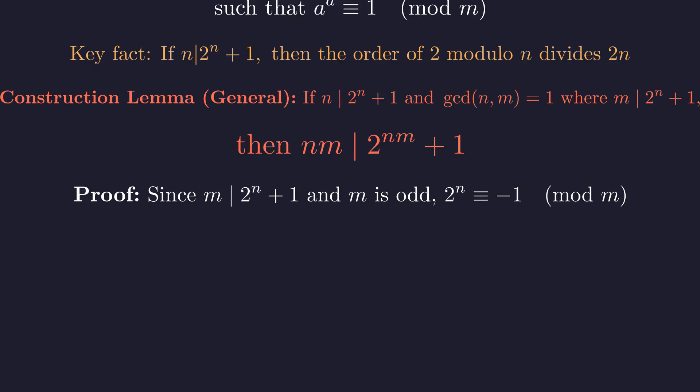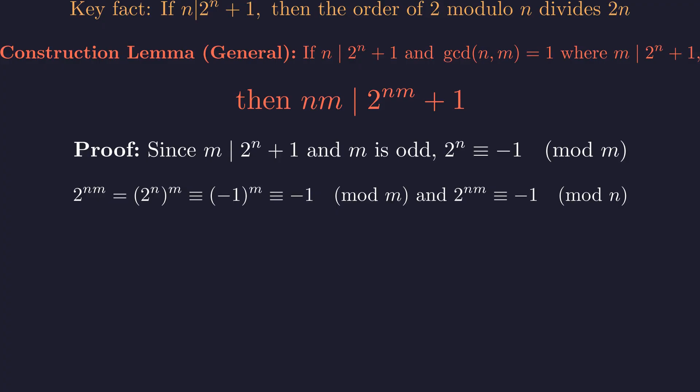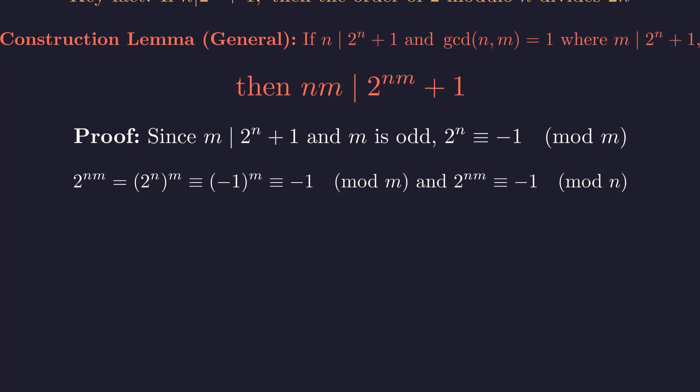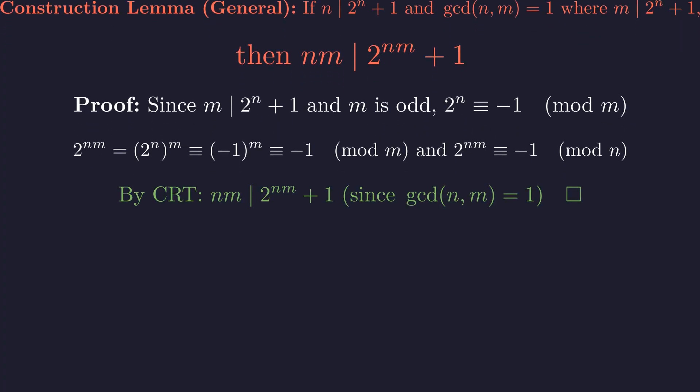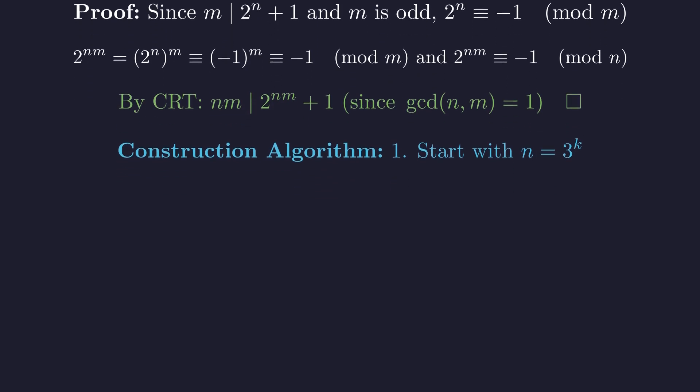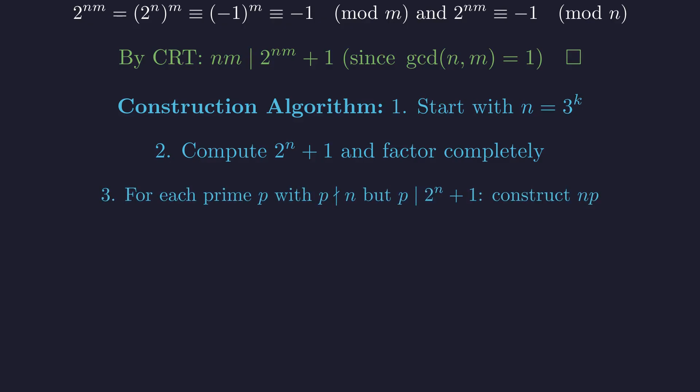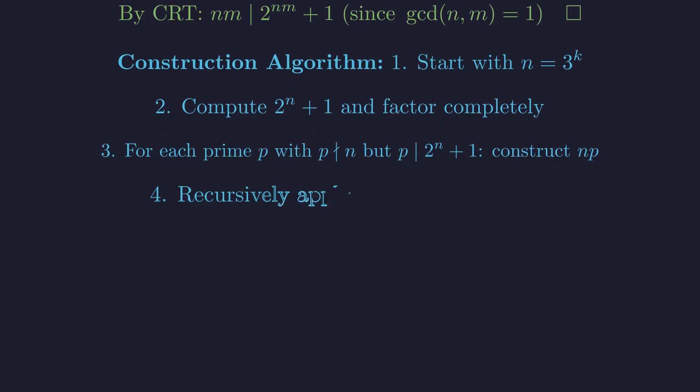Proof. Since m divides 2 to the n plus 1 and m must be odd, we have 2 to the n congruent to negative 1 modulo m. Therefore, 2 to the n m is congruent to negative 1 modulo both m and n, since m is odd. By the Chinese remainder theorem, since n and m are coprime, their product divides 2 to the n m plus 1. Let me outline the systematic construction algorithm. First, start with any power of 3. Second, compute 2 to the n plus 1 and factor it completely. Third, we apply our lemma. For each new prime factor p that we find, which is coprime to n, our lemma guarantees that n times p is a new solution. Fourth, recursively apply this process to all new solutions, creating an infinite branching tree.